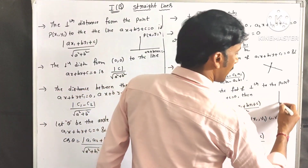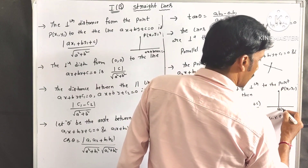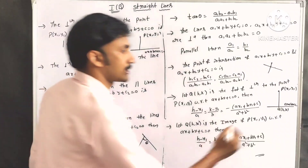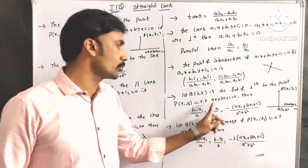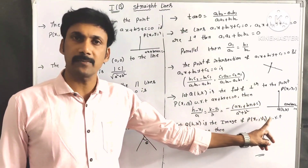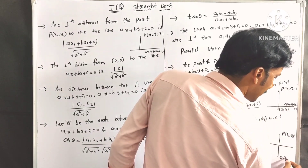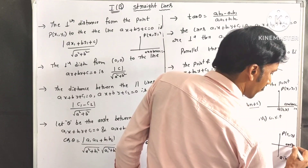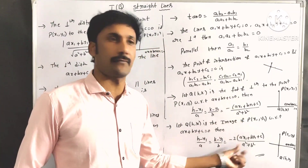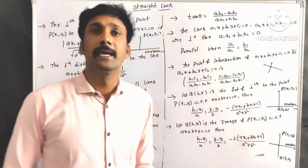The foot of the perpendicular Q of h, k from point P of x1, y1 to the line ax plus by plus c equal to 0 is given by: h minus x1 by a equal to k minus y1 by b equal to minus of ax1 plus by1 plus c by a square plus b square. For the image Q of h, k of point P of x1, y1 with respect to the line ax plus by plus c equal to 0, the formula is: h minus x1 by a equal to k minus y1 by b equal to minus 2 times ax1 plus by1 plus c by a square plus b square. The difference between foot of perpendicular and image is the factor of 2.